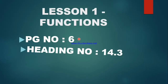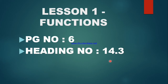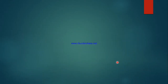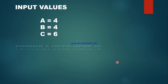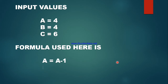This is lesson 1 functions, page number 6, heading number 14.3 — the final topic of lesson 1. For the iteration method, the input values are: a is equal to 4, b is equal to 4, and c is equal to 6. The formula used is: a = a minus 1, b = b minus 1, and c = c plus 2. If the condition is true, we will execute this formula.